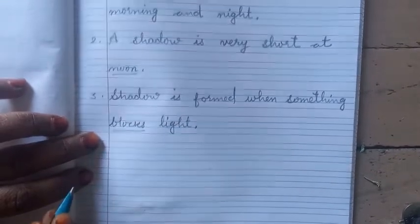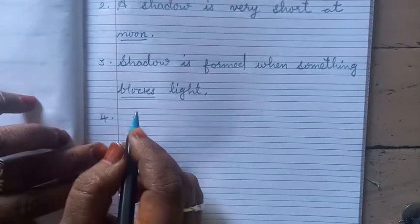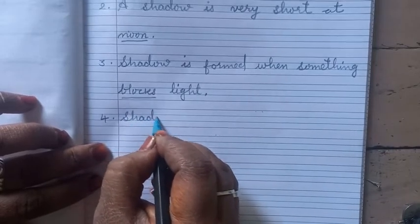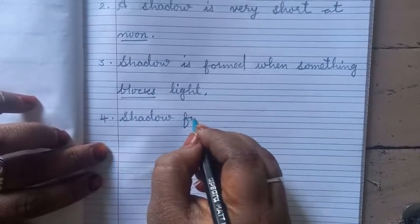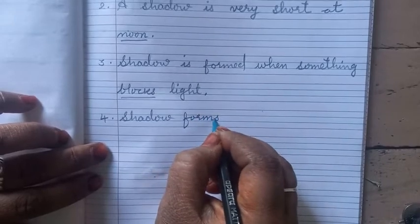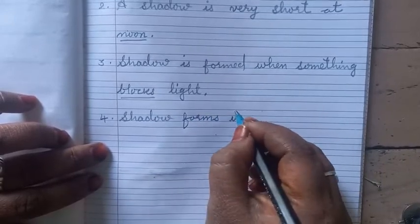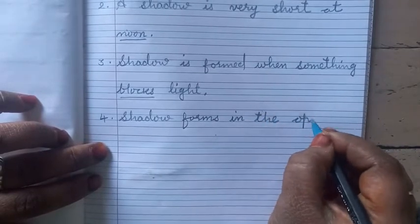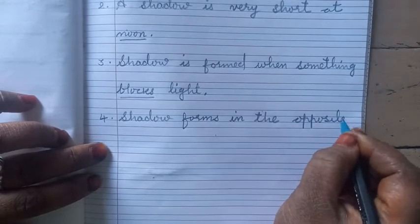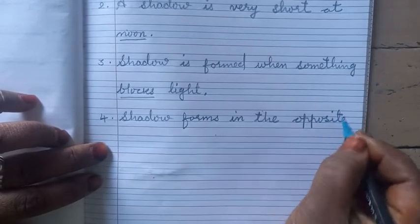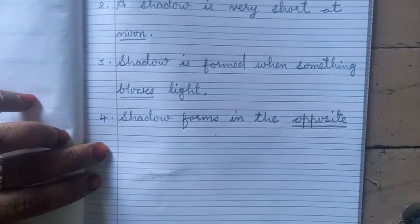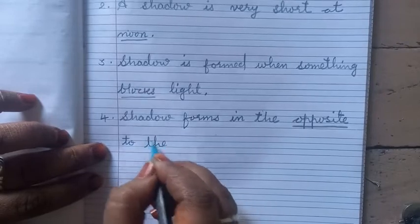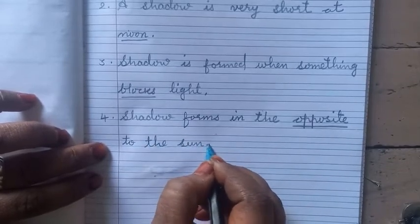Number 4. Shadow forms opposite to the sun.